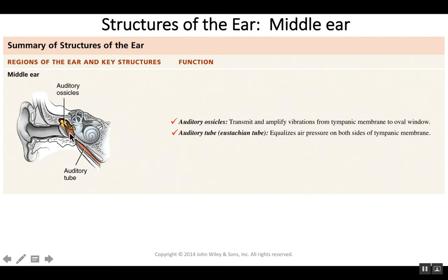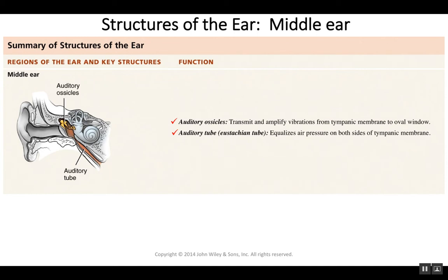The auditory tube is there to equalize pressure on each side of the tympanic membrane. If pressure is different on one side versus the other, the tympanic membrane will not vibrate properly. For instance, when you change altitudes, pressure changes in the atmosphere. If this tube was closed, the pressure in the inner ear would remain the same while the outer pressure changes. This auditory tube is located in the back of your throat, which opens to the atmosphere. Sometimes when you hear your ears pop, that's the opening of the eustachian tube.